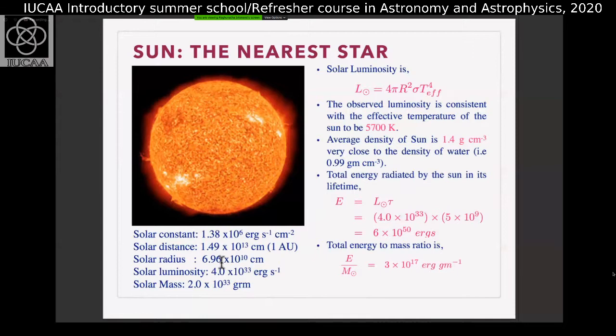The second quantity is what is known as 1 AU. Basically, we can remember it as 1.5 × 10^13 centimeters. This is the distance between Earth and Sun, which is also known as one astronomical unit. If you look at the radius of the Sun, it's of the order of 7 × 10^10 centimeters. The ratio of radius of the Sun to the distance between Earth and Sun is something like 200.